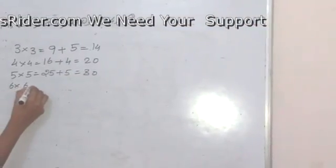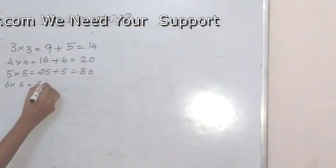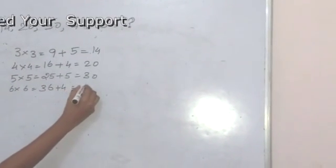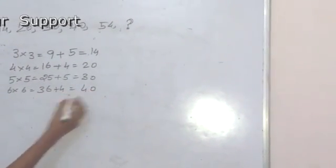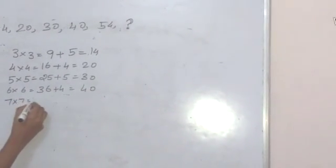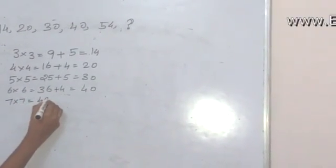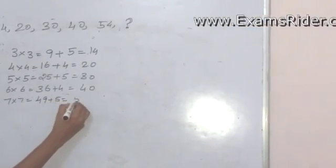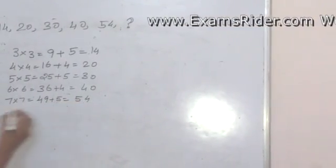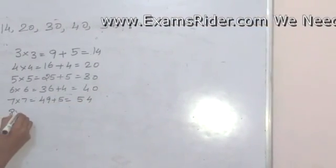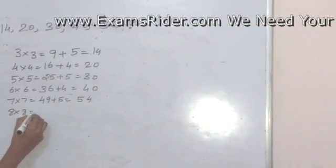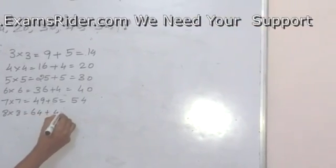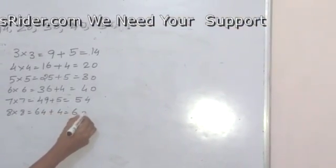6 into 6 is equal to 36, plus 4 is equal to 40. 7 into 7 is equal to 49, plus 5 is equal to 54. Now 8 into 8 is equal to 64, plus 4 is equal to 68.